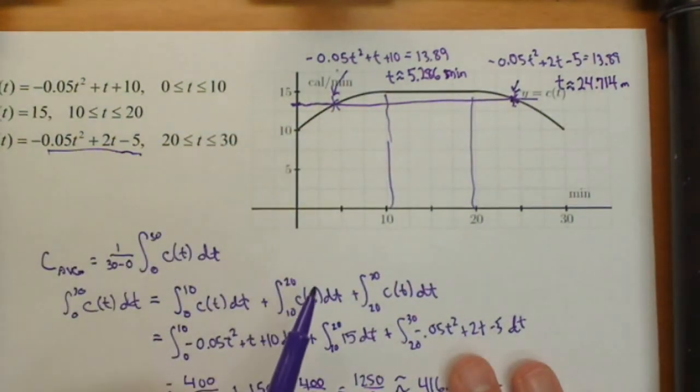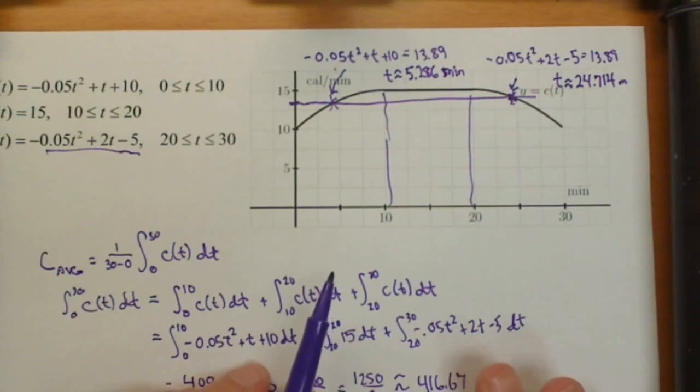So there's always gonna be at least one point where we are equal to our average rate of change over an interval.